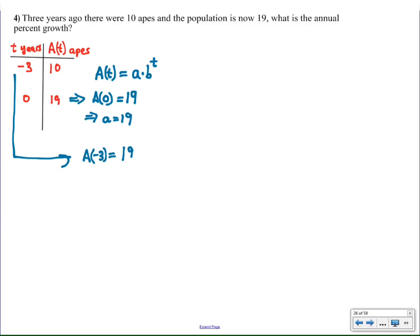And I also know that when x is negative 3, y is 10. So I put 19, b to the negative 3 equals 10. I'm going to make that into a positive exponent number by dividing by b. So 1 divided by b cubed is the same as b to the negative 3.